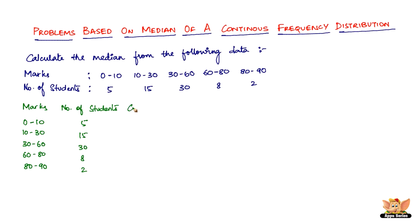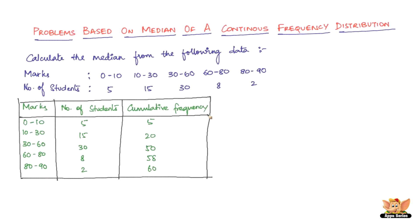Then we've got the cumulative frequency. So the cumulative frequency is going to be 5, 5 plus 15 is 20, 20 plus 30 is 50, 50 plus 8 is 58, 58 plus 2 is 60. Here it is.